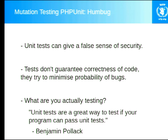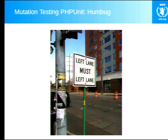Tests don't guarantee correctness — they try to minimize the probability of having bugs. A great quote from Benjamin Pollack on Twitter: 'Unit tests are a great way to test if your program can pass unit tests.' That's a self-fulfilling test. It's like a sign that says 'Left lane must left lane' — it's correct, but it doesn't make any sense. Sometimes writing a test feels like this — you have so much control over how you write them that you can almost fudge them, especially when there isn't much time in a project. There's so much power in the developer's hands. Who will test the tests?